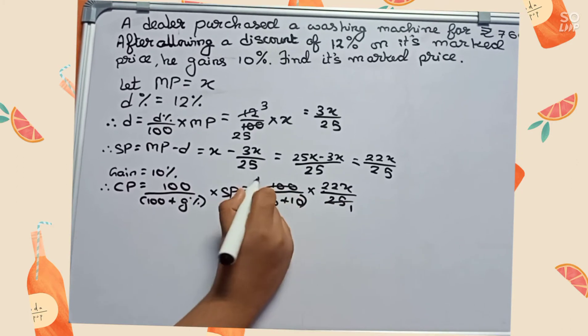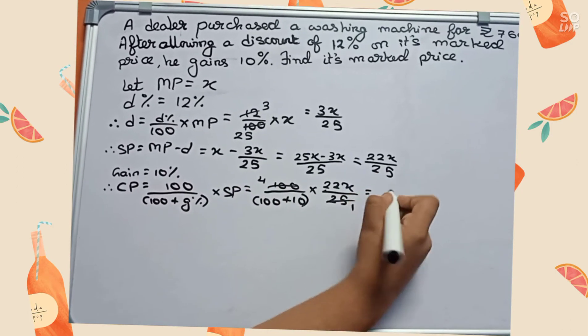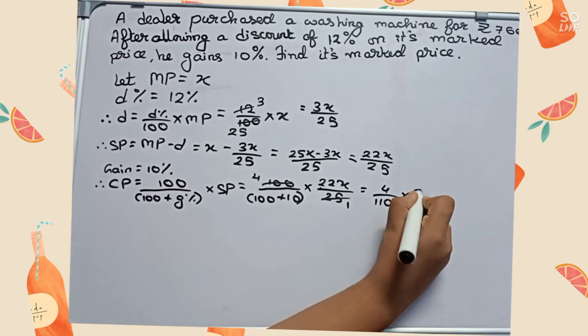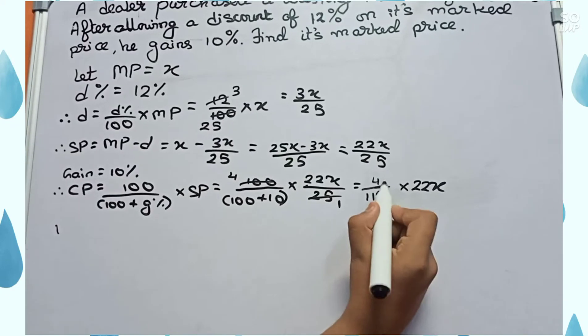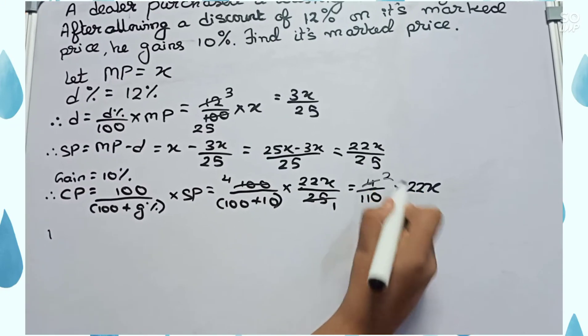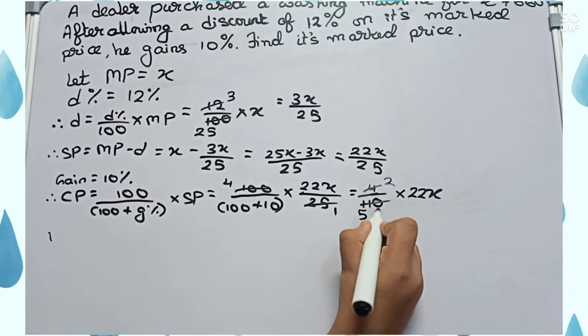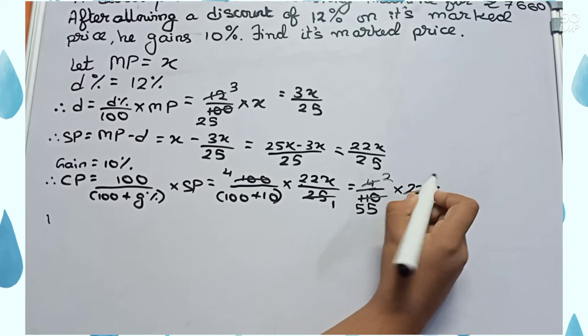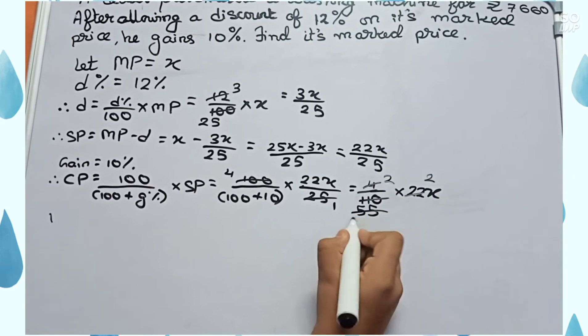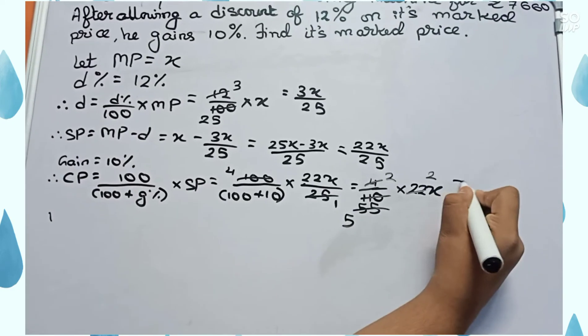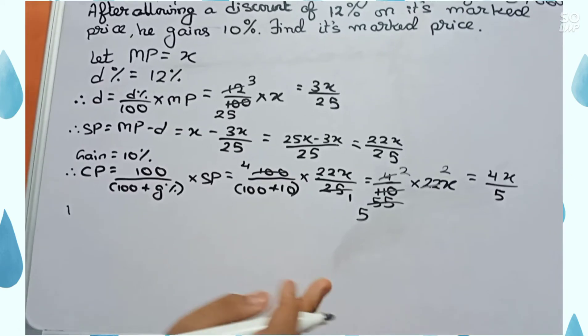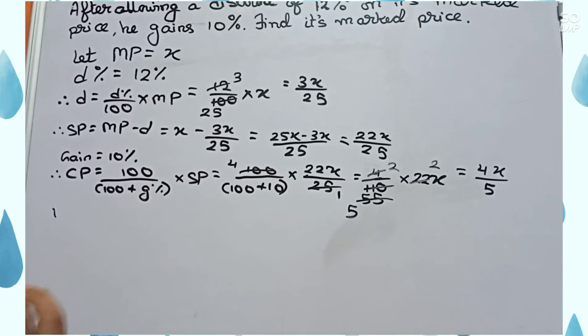Now we will cut 4 and 110 by 2 to become 2 by 55. Now we will cut 22 and 55 by 11, so it becomes 2 by 5. So it will become 4x by 5. So the CP is 4x by 5.